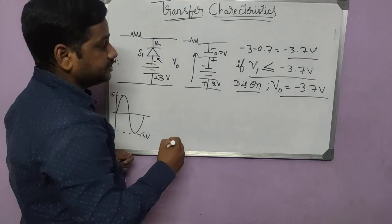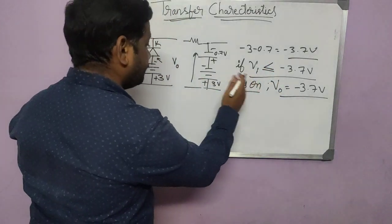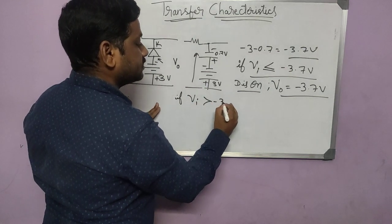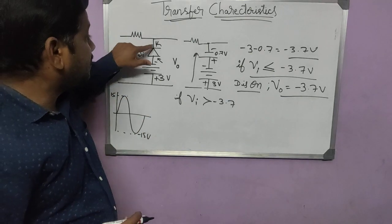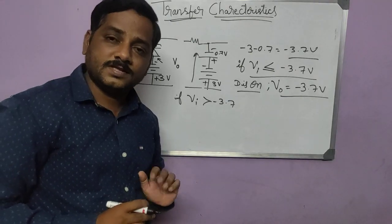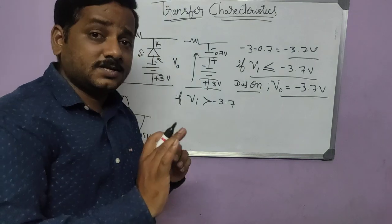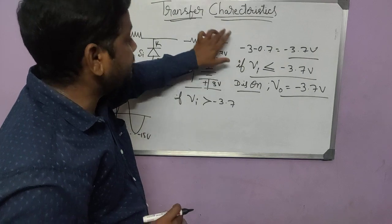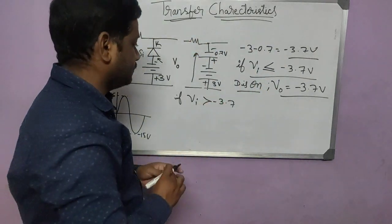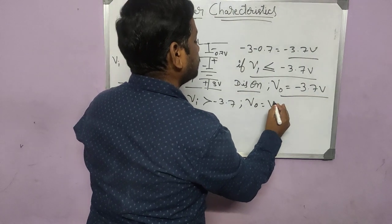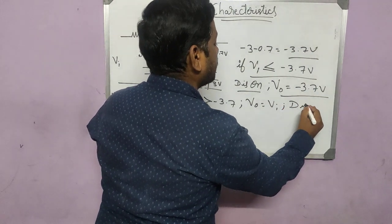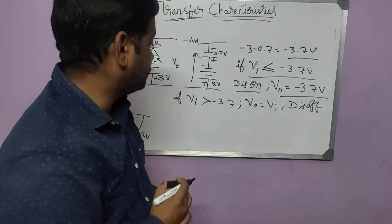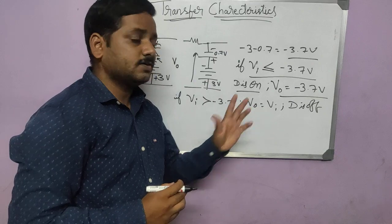The second condition: when the diode is OFF. If V_in is greater than minus 3.7 volts, the cathode will have a higher potential than the anode, so the diode is OFF. If the diode is OFF, we get an open circuit, so the output just follows the input. Therefore V_out equals V_in when the diode is OFF.